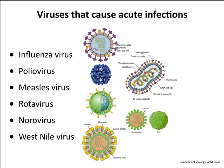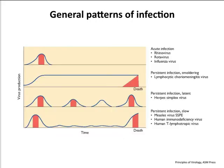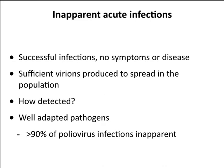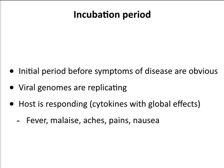In an acute infection, symptoms actually show up during the infection — as virus is peaking, symptoms are peaking. Typically the virus titer is beginning to decline as you're just feeling ill. It's hard to treat these infections as a consequence, because by the time you feel ill the virus titer is declining and there's no point in treating it.